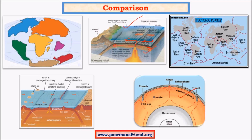Plate tectonics theory is mainly based on the division of Earth's lithosphere into various continental and oceanic plates. There are oceanic plates such as the Pacific plate, and continental plates such as the Eurasian plate. There is constant interaction between these plates due to forces generated by convection currents in the mantle.